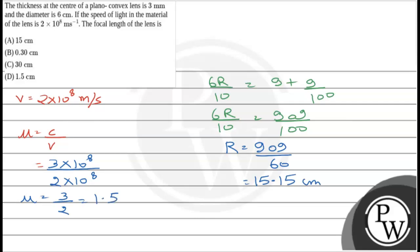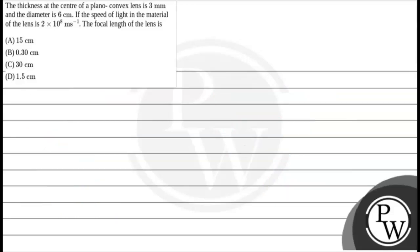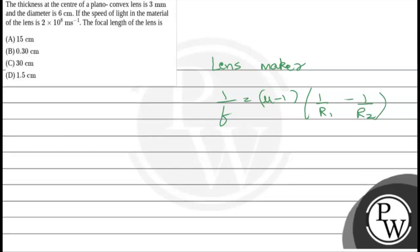Now we will use this information to calculate the focal length of the lens. We will use the lens maker formula: 1/f = (μ - 1)(1/R1 - 1/R2). I explained earlier that for a plane surface, the radius of curvature R1 will be infinite, and due to the convex surface, R2 is negative.